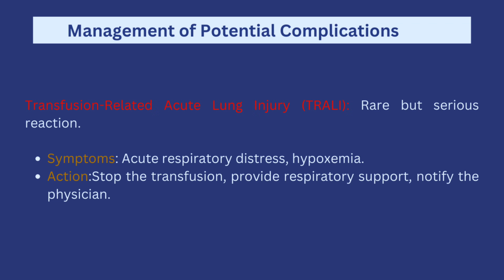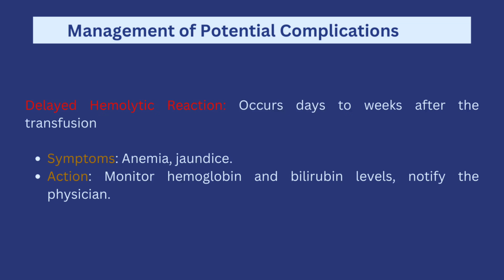TRALI, which stands for transfusion-related acute lung injury, is a rare but serious complication of blood transfusion. Symptoms include acute respiratory distress and hypoxemia, which will be evident when you check the patient's SpO2 — oxygen saturation levels. Actions include stopping the transfusion, providing respiratory support, and notifying the physician. Remember, you are managing these patients with other healthcare professionals and must always collaborate, especially in situations like these.